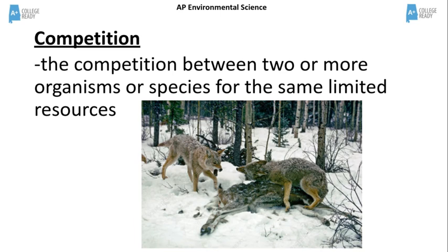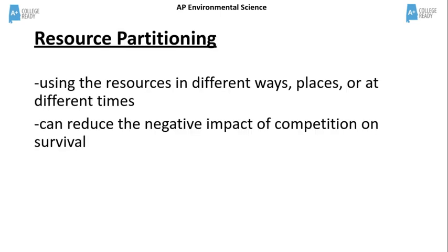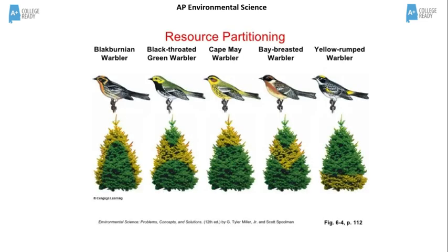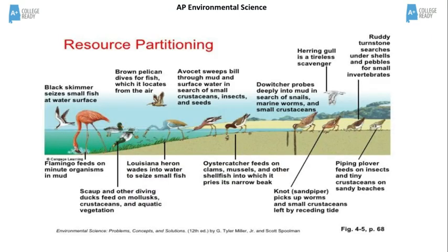One way that competing species can manage to coexist is through resource partitioning — using the resources in different ways, places, or at different times. It can reduce the negative impact of competition. In the picture of five different types of warblers, we see that they all share the same resource by feeding or nesting in different locations of the trees. Another example is the various kinds of birds feeding at the seashore, feeding in different locations and on different kinds of organisms, reducing competition when feeding in the same general area.